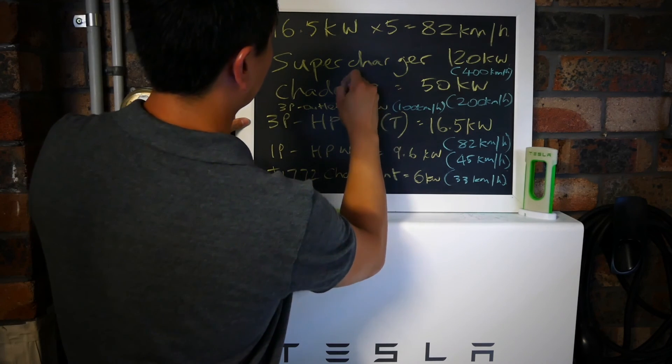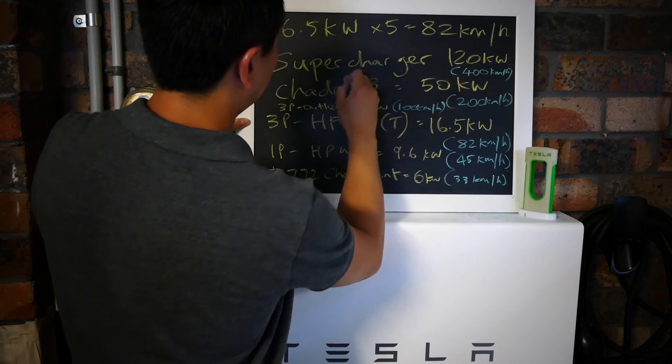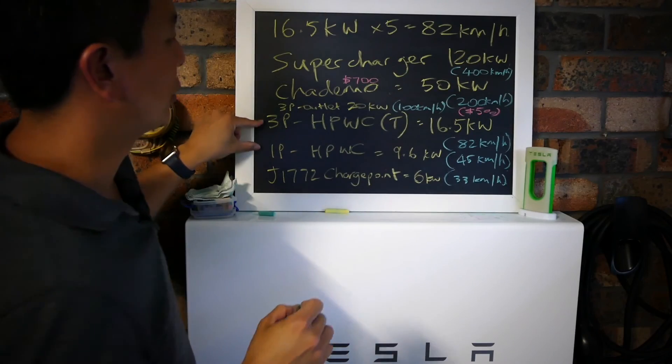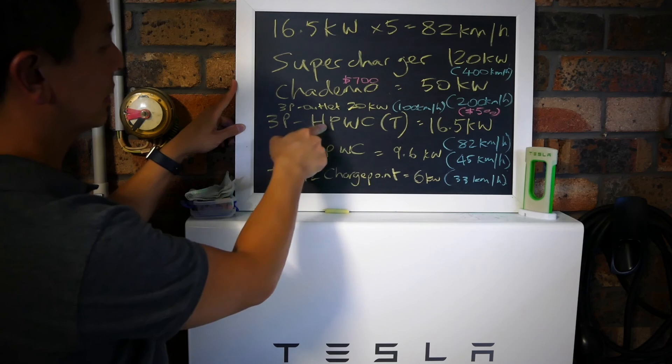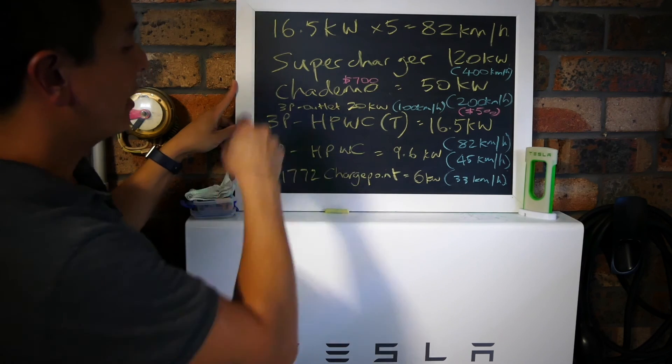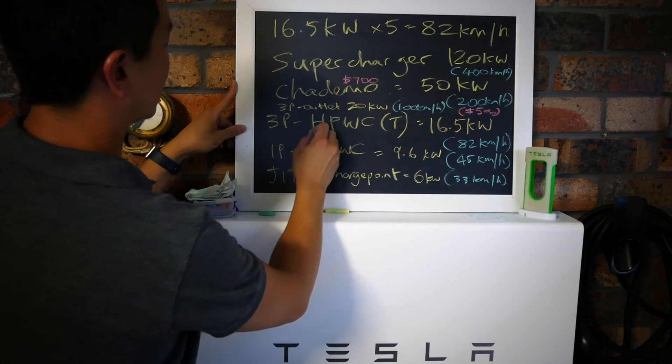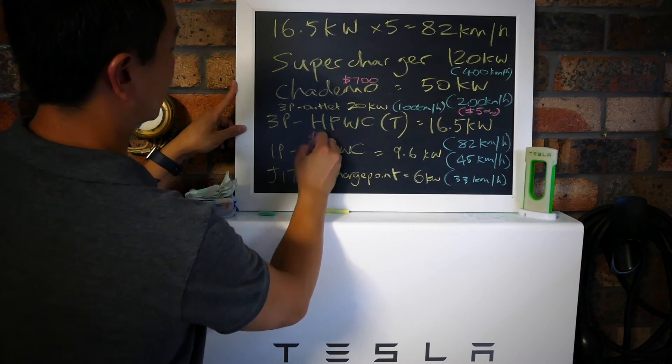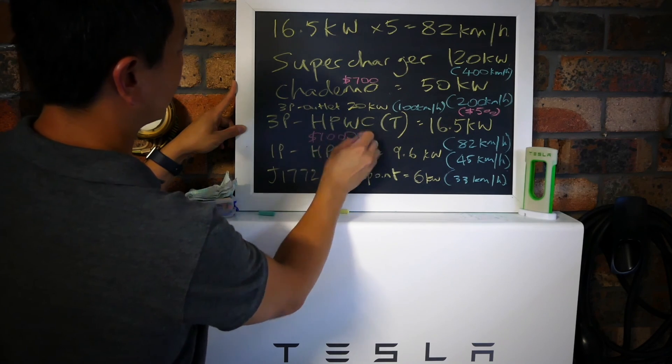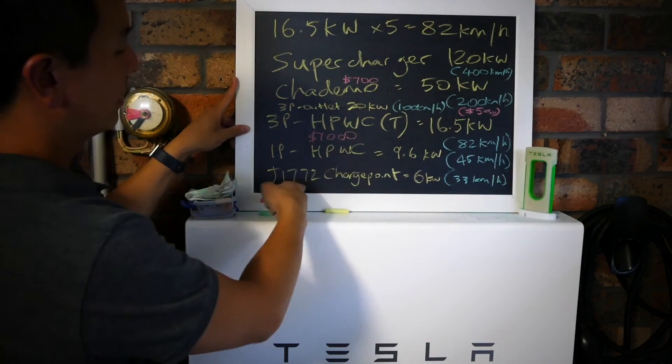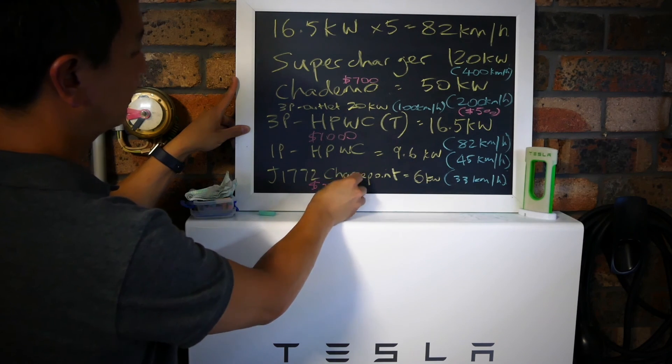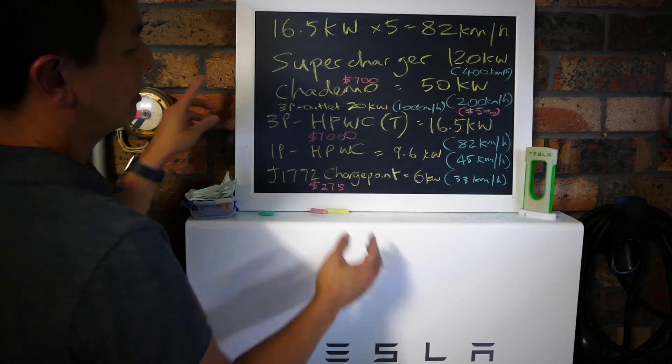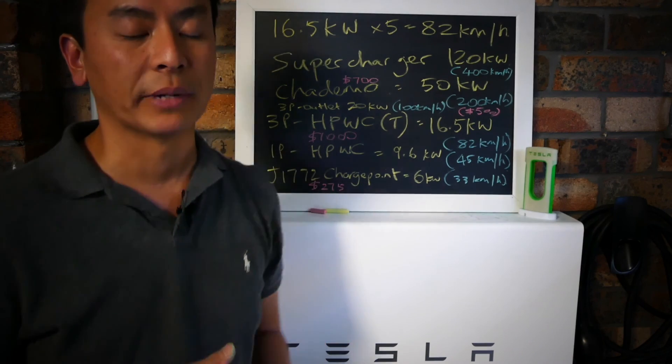When you buy a new Tesla, you can either get the option of a three-phase HPWC or a single phase. It comes with a car, but you need to pay an electrician, sometimes up to $1,000, to come to your house to install it. The J1772 cable costs $275, much slower, but if you're at a shopping center, not a bad option indeed.